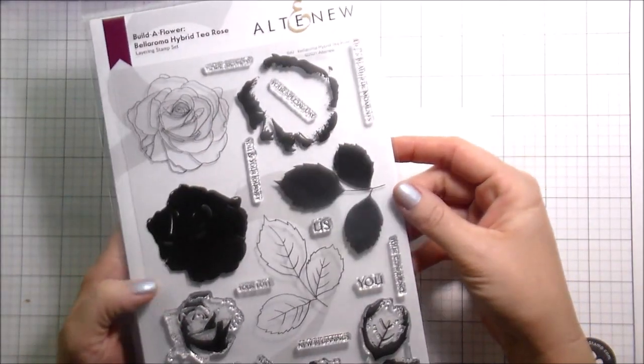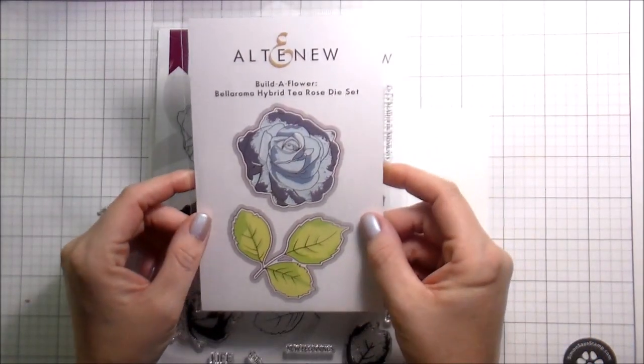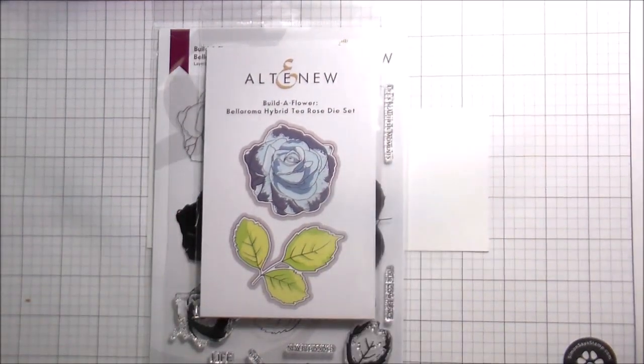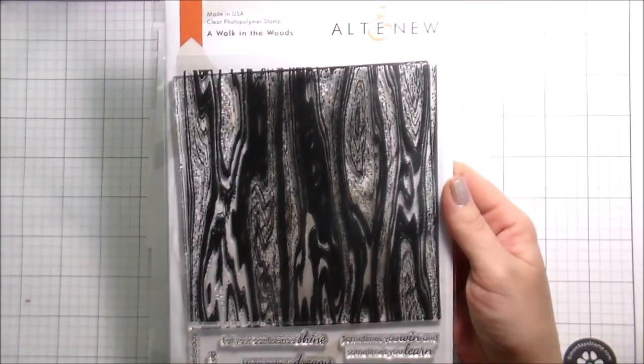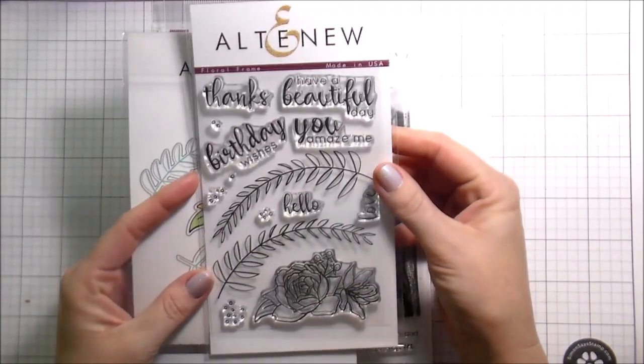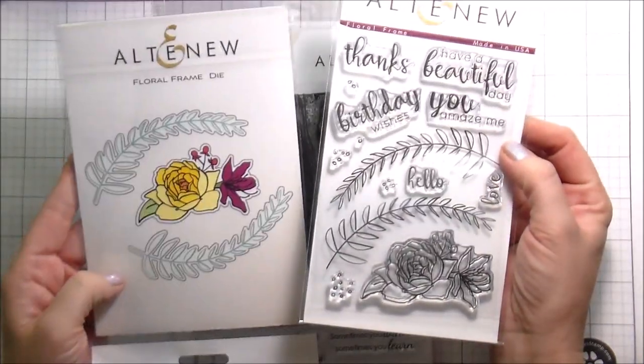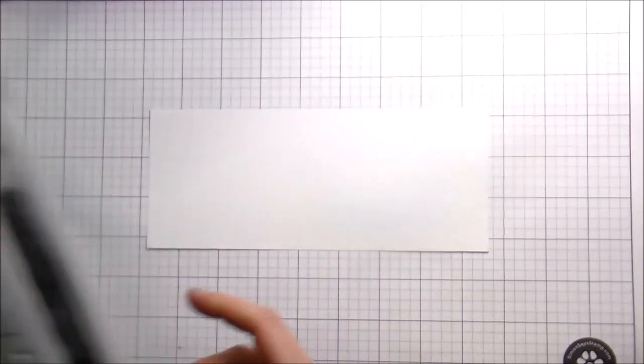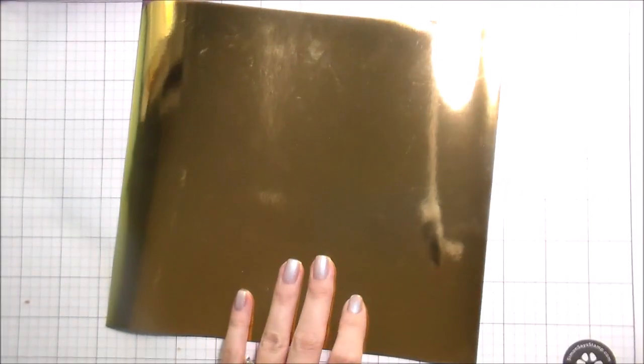This is the new Bella Roma Hybrid T-Rose from Altenew. It's a layering stamp set and also has these matching dies that come with it. In addition to that, I'm going to be using Walk in the Woods and the Floral Frame stamps and dies.